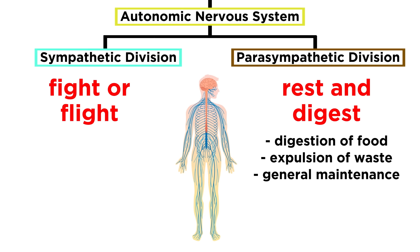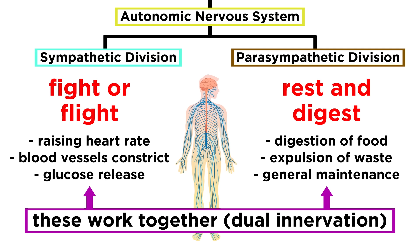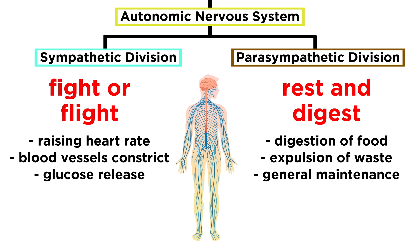The sympathetic division raises the heart rate, constricts blood vessels, and releases more glucose from the liver — all actions that help an organism evade danger. These two systems work together most of the time to keep the body running smoothly, a process called dual innervation, but in specific moments one may dominate depending on the immediate needs of the organism.